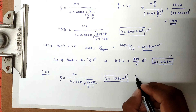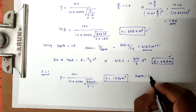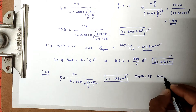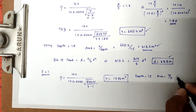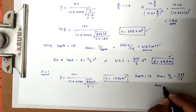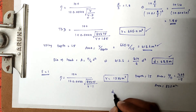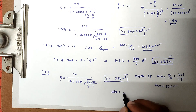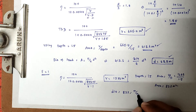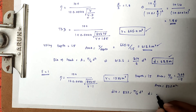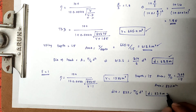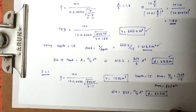Using the same depth of 1.5 m, area equals 1,233 / 1.5 = 822 m². From area = π/4 × D²: 822 = 3.14/4 × D², so D = 32.4 meters. This is the final answer for the standard rate trickling filter. This is the method to solve trickling filter problems. Thank you.